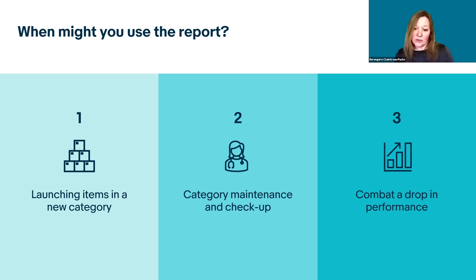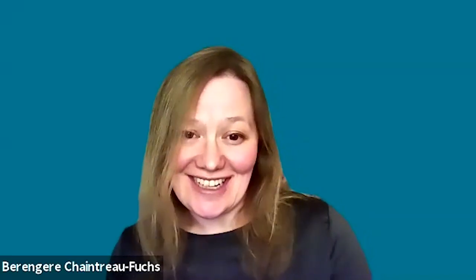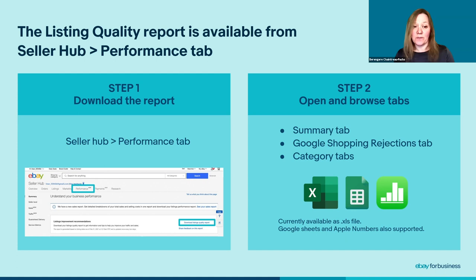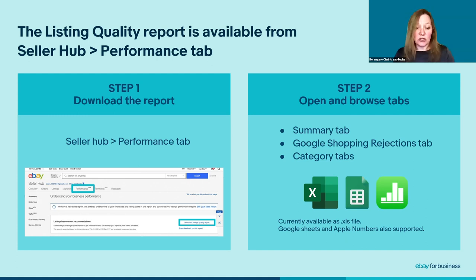Applying our recommended actions at listing level could help bring up your listing and your overall category performance. Now let's look at the report in detail. The Listing Quality Report is available to selected sellers and frequent users of the Seller Hub Performance tab. It will be extended to all shop subscribers progressively over the coming months. On the main page of the Seller Hub Performance tab, you will find a message and a button to download the report. The report itself is an Excel file that you can download and open. The report is also compatible with Google Sheets and Apple Numbers, and a CSV version of the report is coming soon.